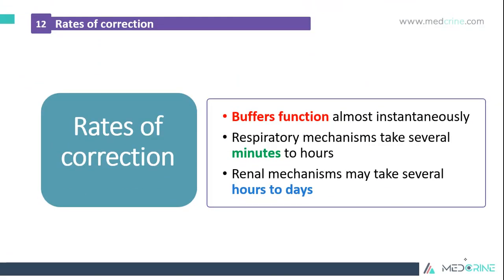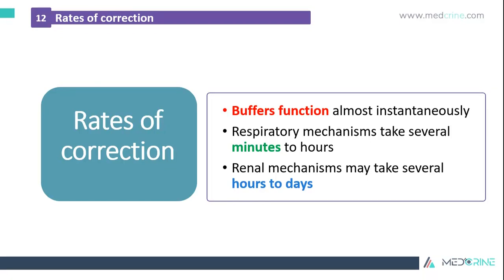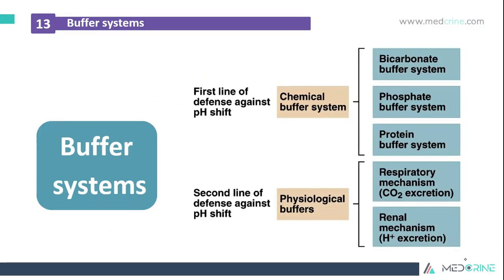The rates of correction differ: buffer systems function almost instantaneously, respiratory mechanisms take several minutes to hours, while renal mechanisms take several hours to days. To summarize, the first line of defense against any pH shift is the chemical buffer system comprising the bicarbonate, phosphate, and protein buffer systems, and the second line of defense is the physiologic buffers including respiratory mechanism and renal mechanism.